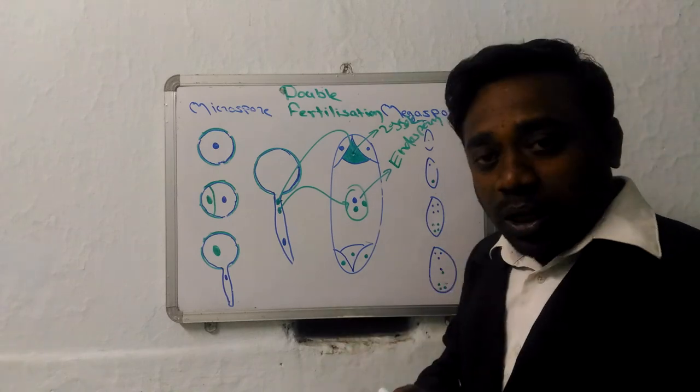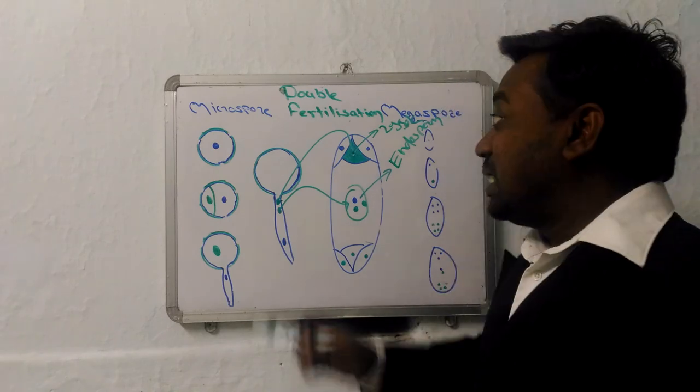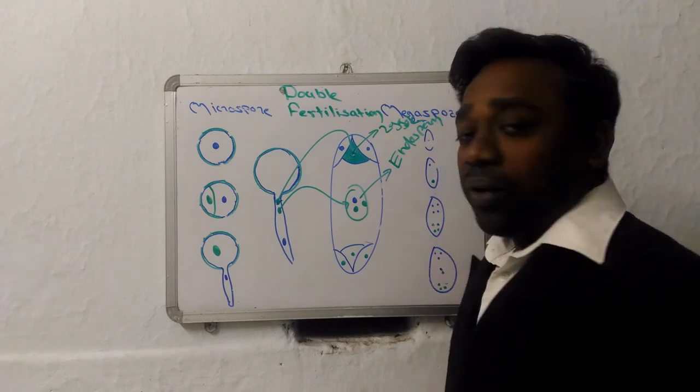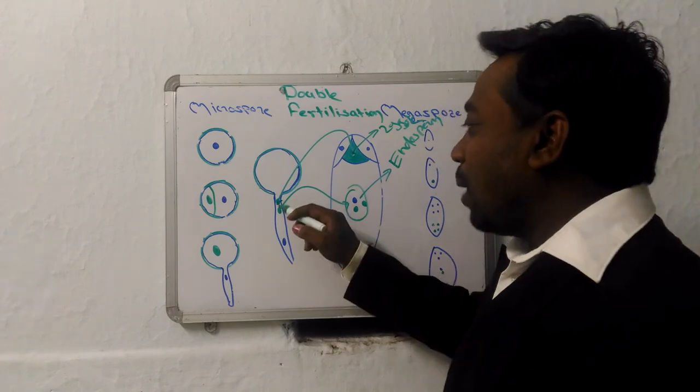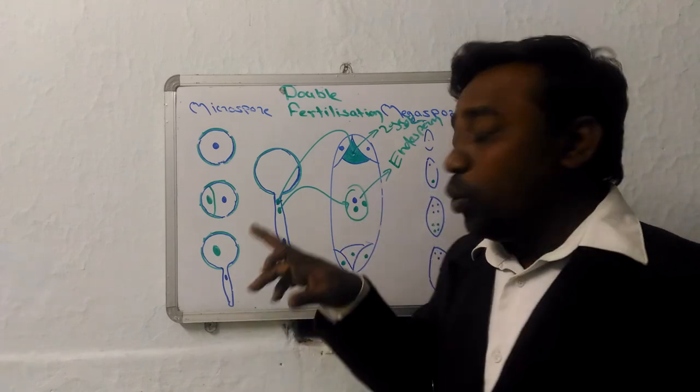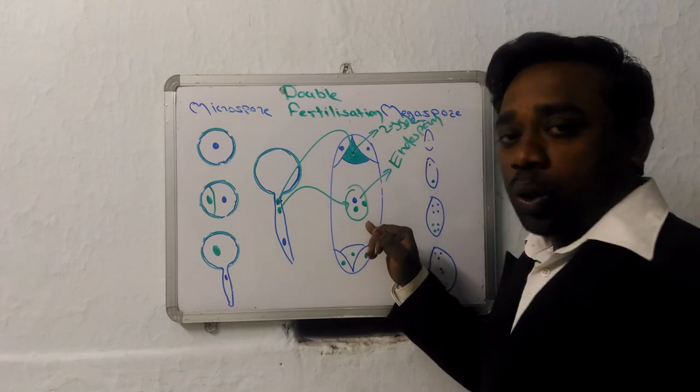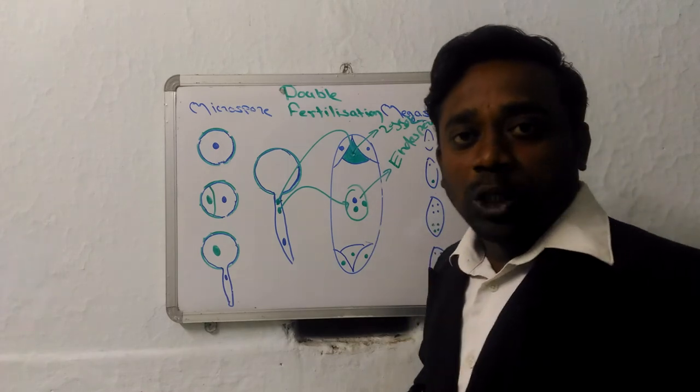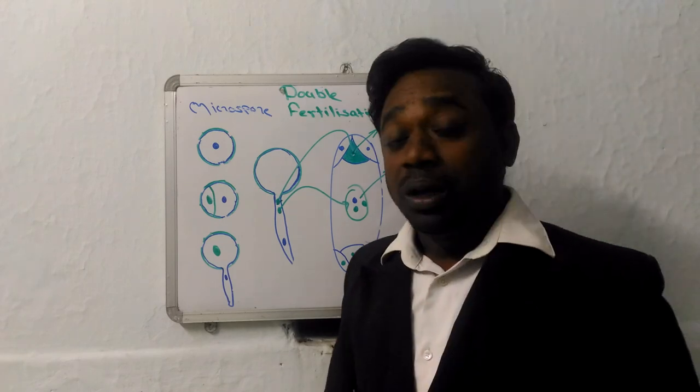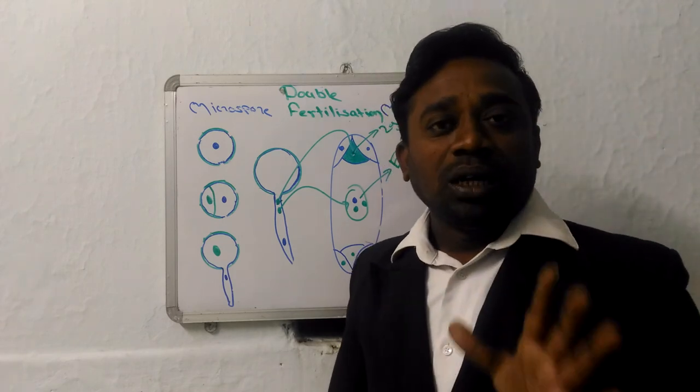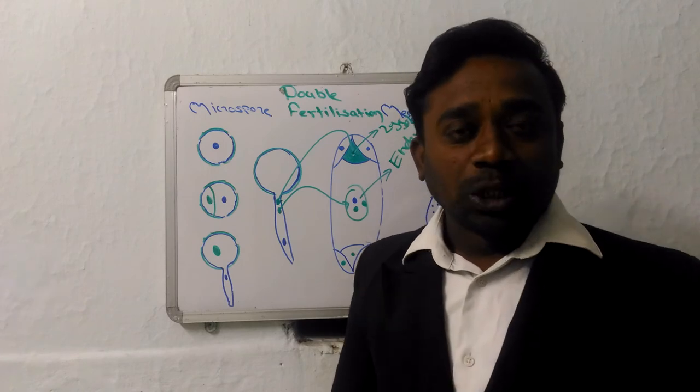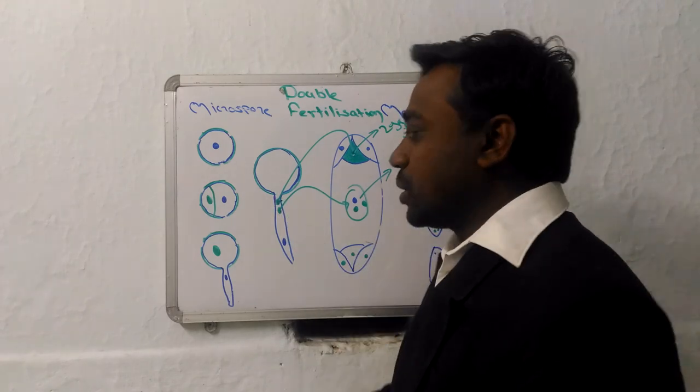Now triploid endosperm is possible in angiosperm just due to double fertilization. So we will define double fertilization as the fertilization in which one male gamete fuses with egg to give zygote and another male gamete fuses with secondary nucleus to give triploid endosperm. Now this is all about double fertilization in case of angiosperm. Remember, double fertilization is only present in angiosperm. It is not present in gymnosperm. In gymnosperms, you have only single fertilization.